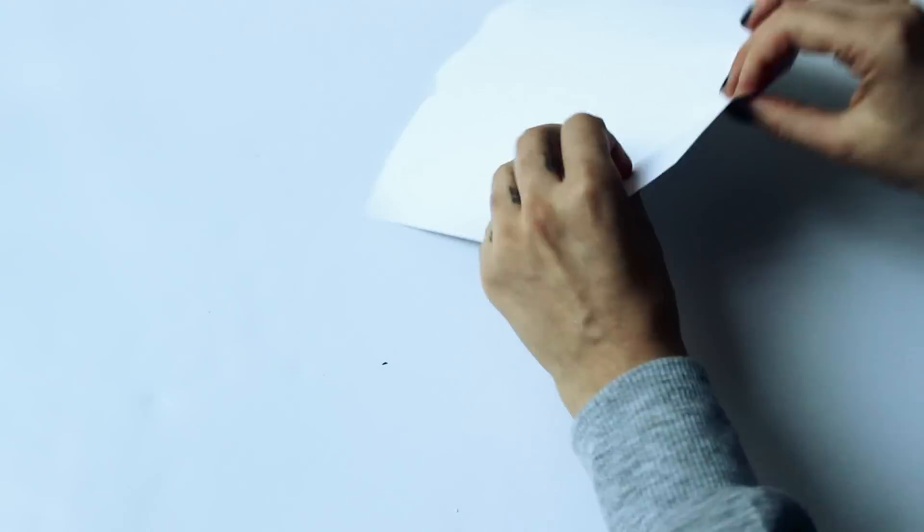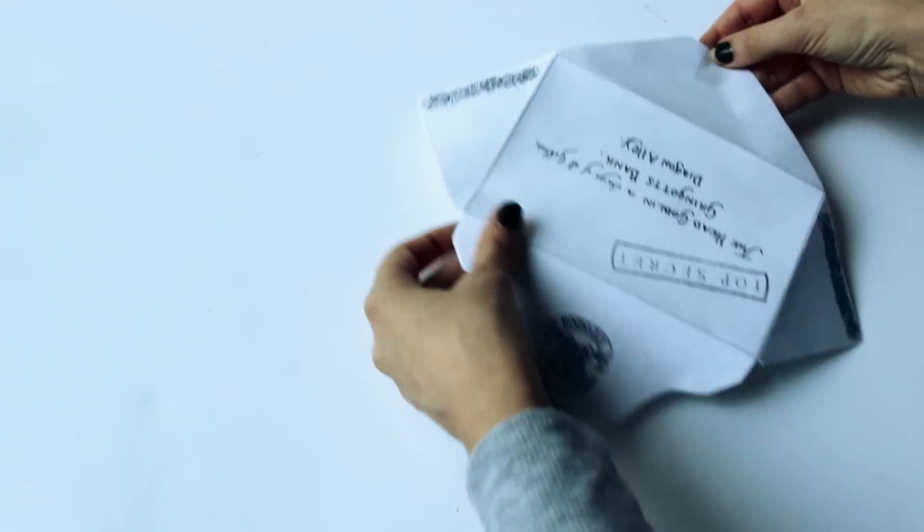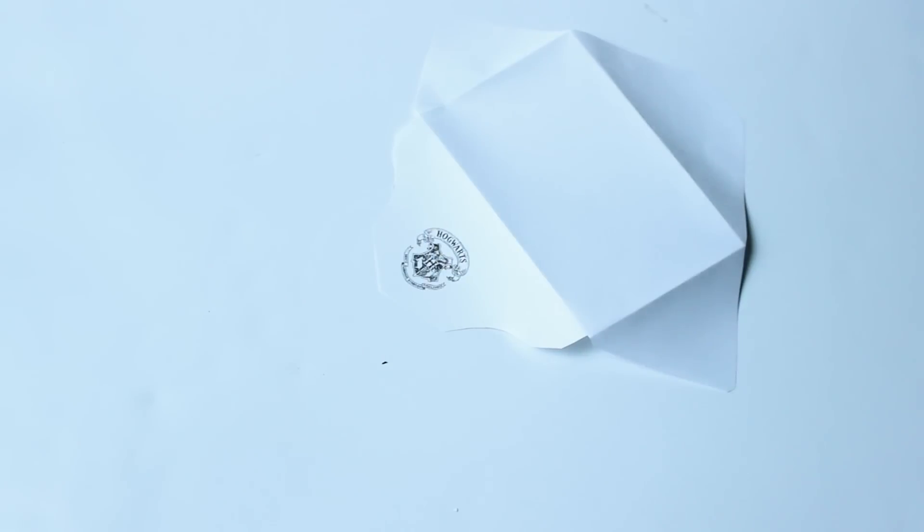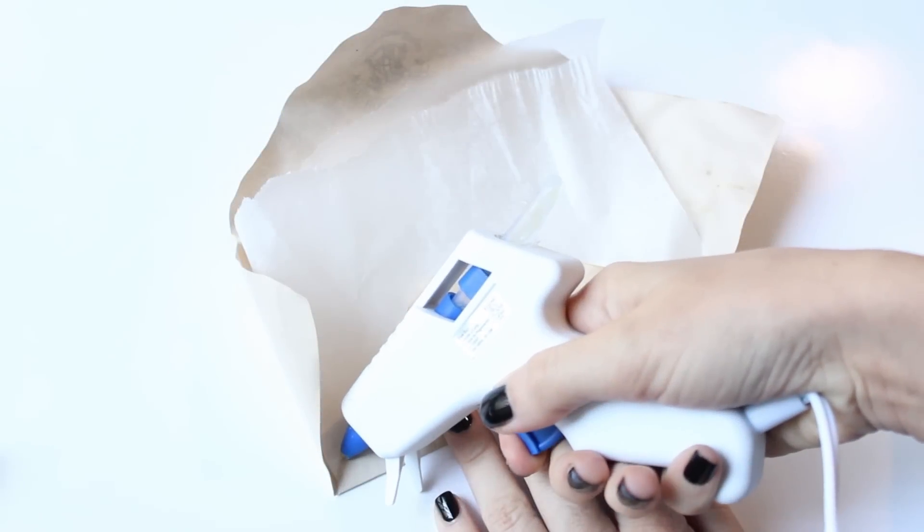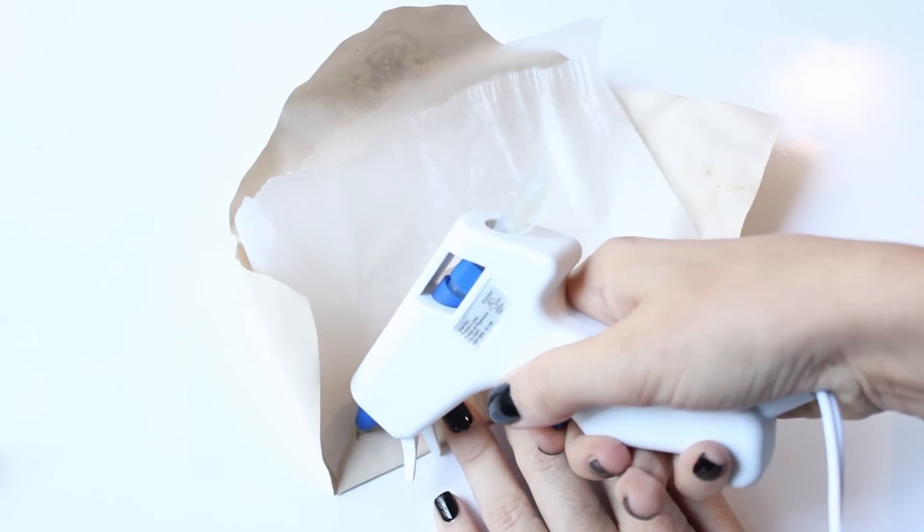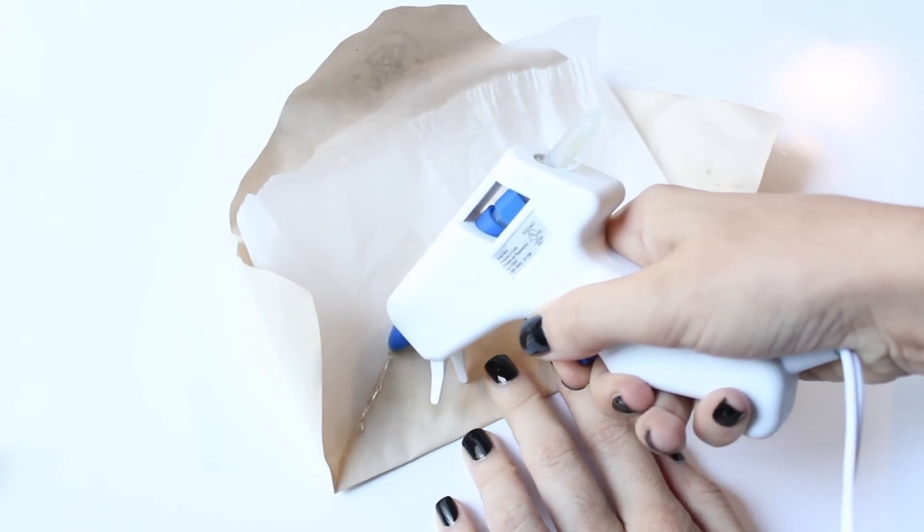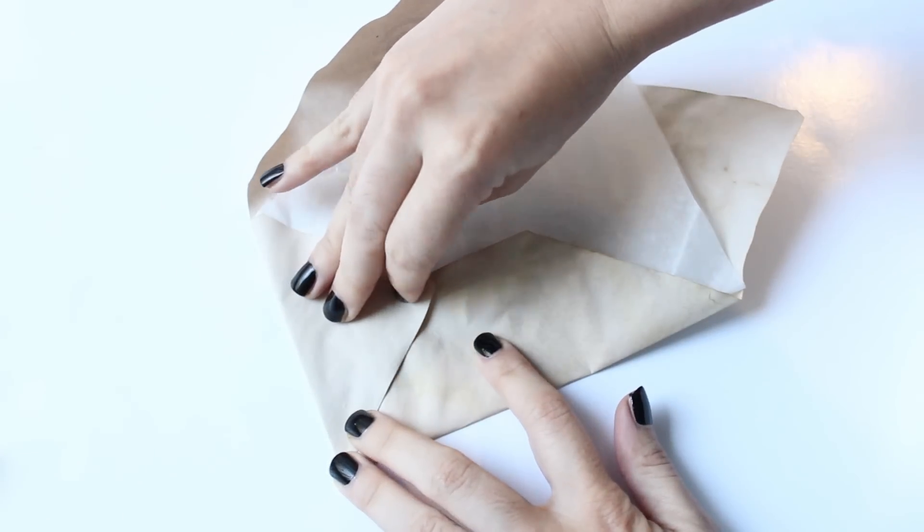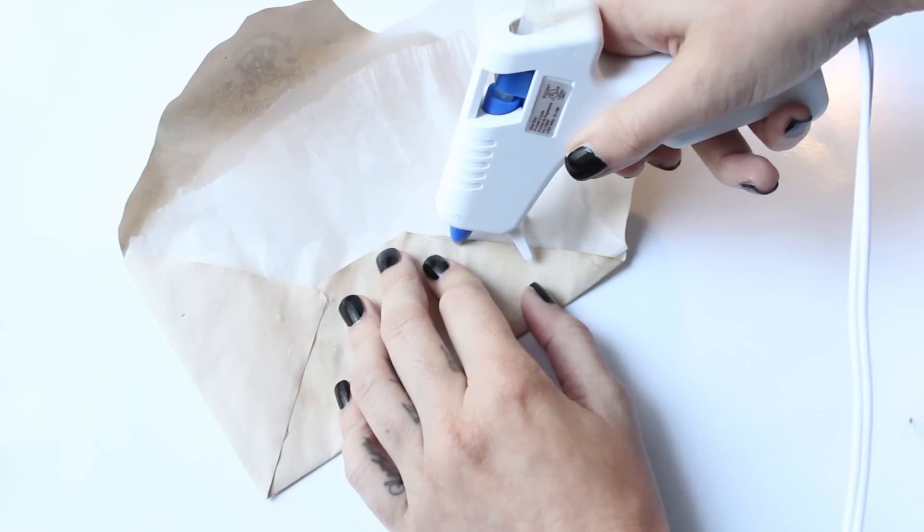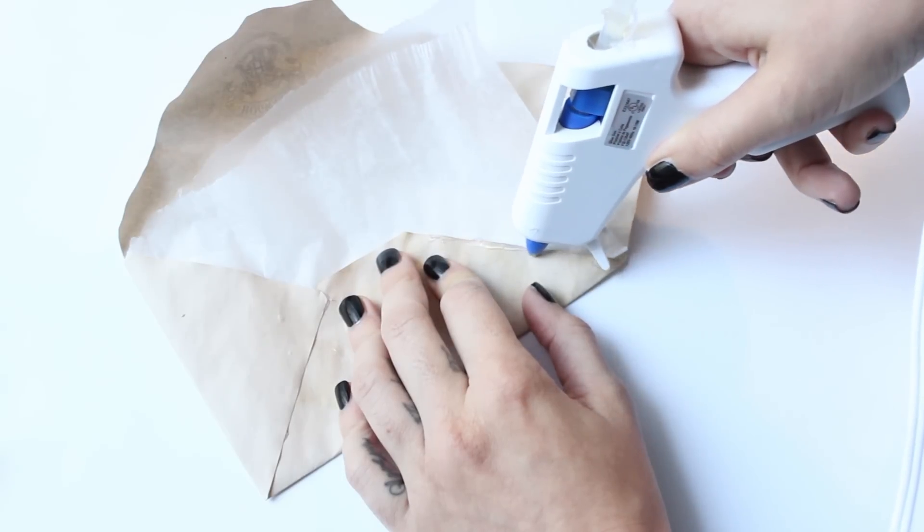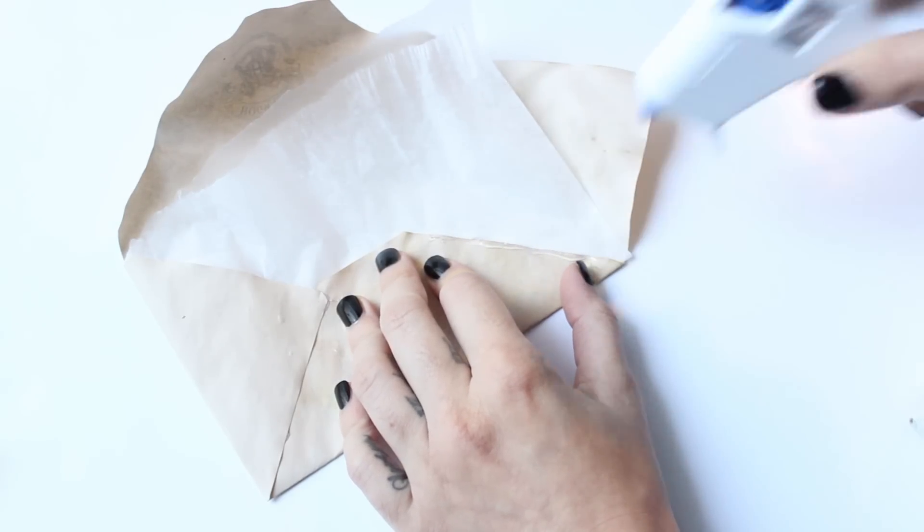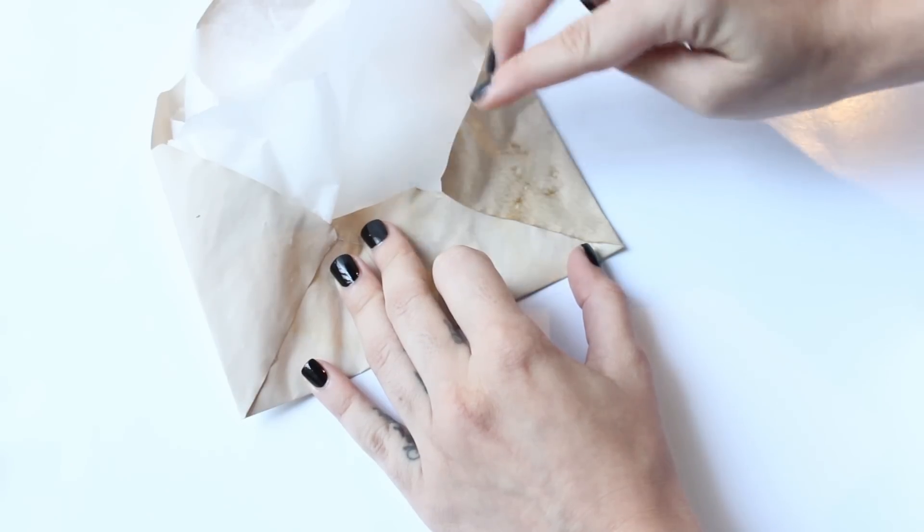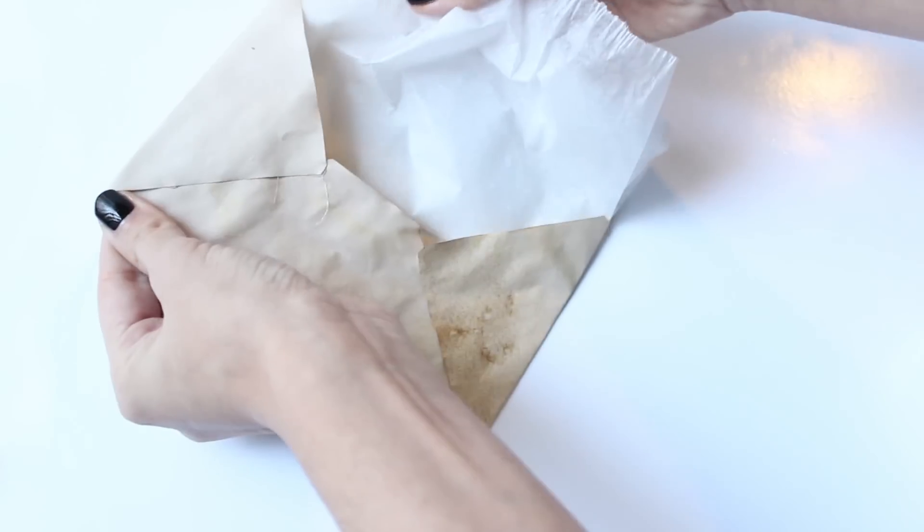Then I separated the two pieces of paper and I made the envelope yellow using the tea method again. Then I put the envelope together with a little bit of hot glue and I put a baking sheet in the middle so the front part of the envelope doesn't stick to the back.